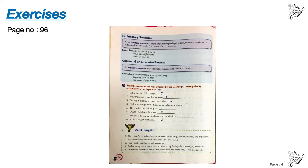Number five: The sun is a hot ball of gases. — This is also a statement, write A. Number six: Ouch! I fell down the stairs. — There is already an exclamation sign after 'ouch', so it is an exclamatory sentence, write E. Number seven: You should not play with knives and matchsticks. — This is advice, and we have advice in imperative sentences, write Im. Number eight: A bus is bigger than a car. — This is an assertive sentence, write A.